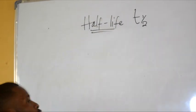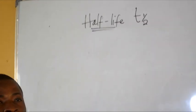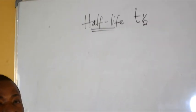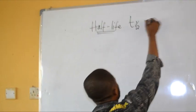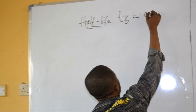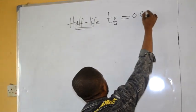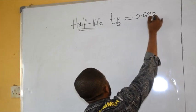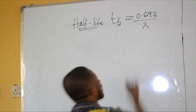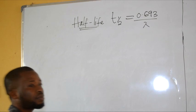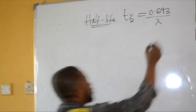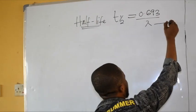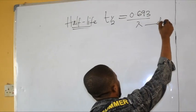So how do we derive the formula for half-life? The equation for half-life is given as 0.693 over the decay constant lambda. Lambda stands for the decay constant.